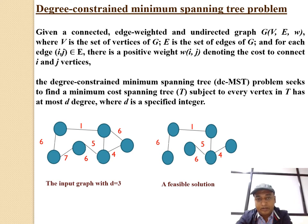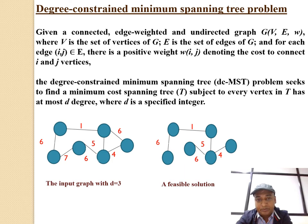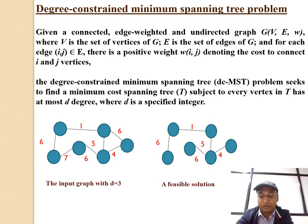One can understand this problem from two figures. Figure 1 represents an input graph with D equal to 3. Figure 2 represents a possible solution for this problem on this input graph with D equal to 3. One can observe from Figure 2 that every vertex has at most D degree, and this is a feasible solution.